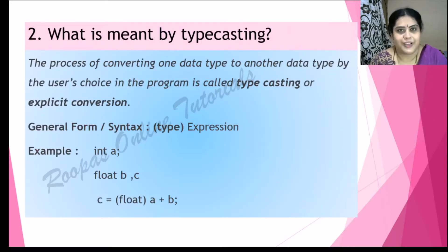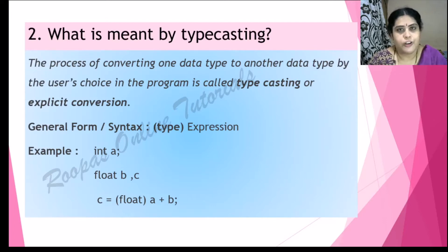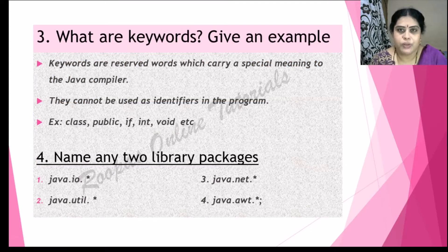What is meant by type casting? The process of converting one data type to another data type by the user's choice — the user wants to convert it — is known as type casting or explicit conversion. The general form is: first the type, then the expression. For example: int a, float b, c — and we have converted int a to float a by doing type casting.